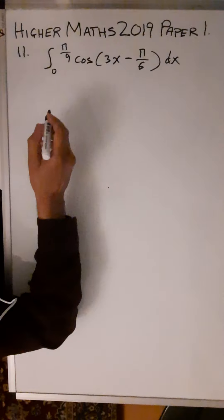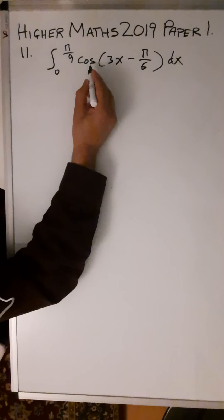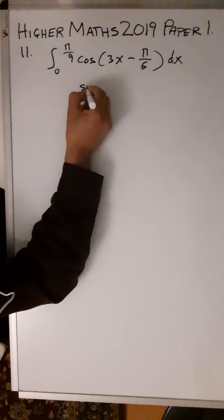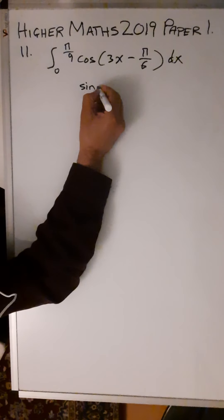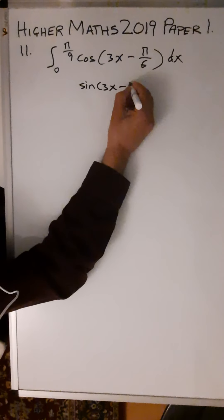This is for 4 marks. The integral of cos is sine, giving sin(3x - π/6).